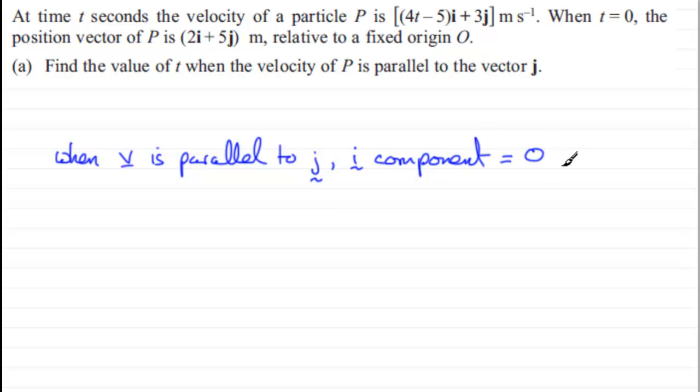And so that means that therefore, 4t minus 5 must equal zero. And then if we add 5 to both sides, 4t equals 5, divide by 4, and you end up with t equaling 5 quarters or 1.25 seconds.